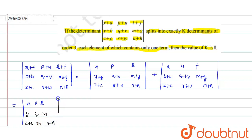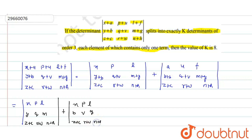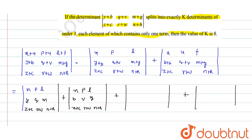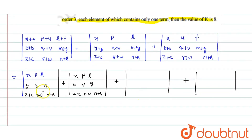So we get: x, p, l in one determinant, then b, v, g — simple. Then z+c, r+w, and n+h. Similarly, if I divide two matrices this way, I will divide into 4 determinants. Then this will divide 2-by-2 terms. When I split the third row, I will divide into 2 more determinants each time, bringing it down to 8 determinants total.